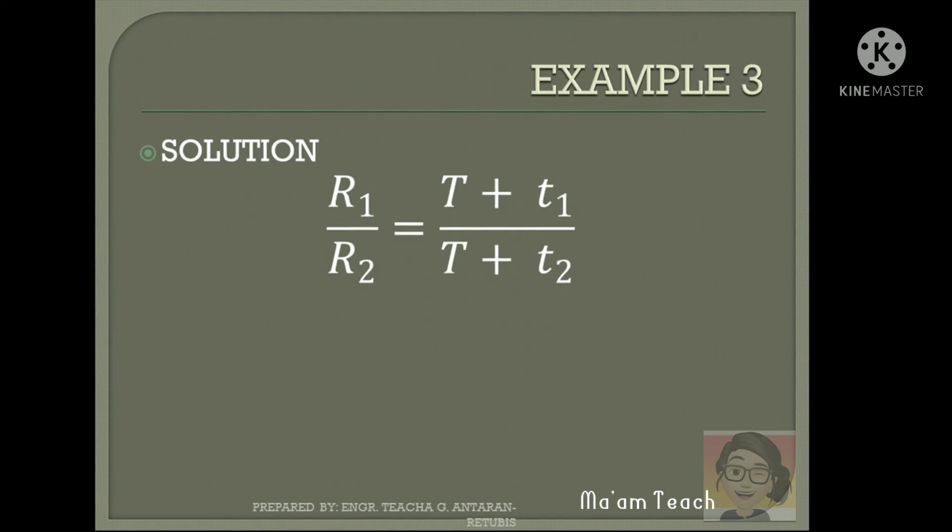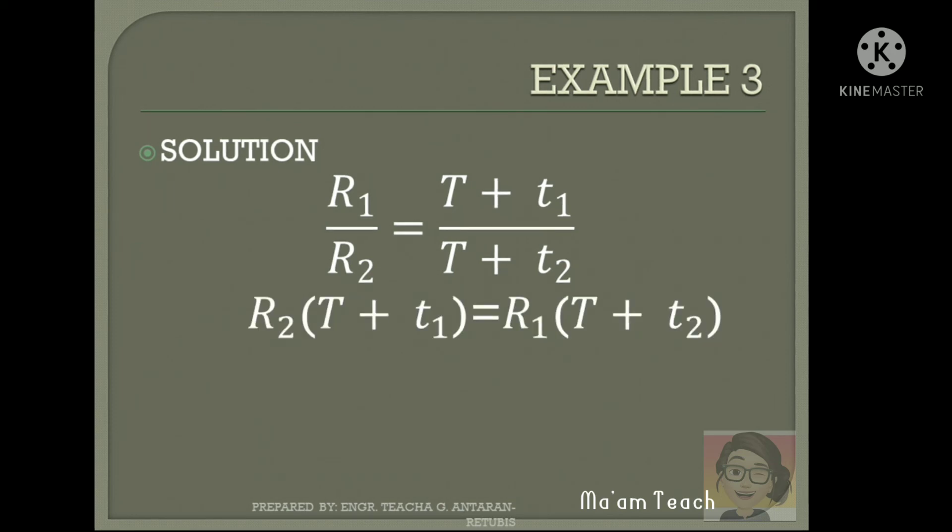Since our target here is R sub 2, cross-multiplying, we have this equation: R sub 2 times quantity T plus T sub 1 equals R sub 1 quantity T plus T sub 2.